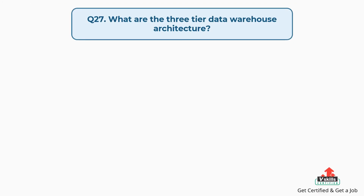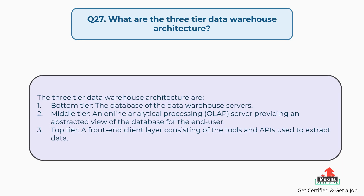Question number twenty-seven: What are the three-tier data warehouse architecture layers? The three tiers are: first, the bottom tier — the database of the data warehouse servers; second, the middle tier — an online analytical processing (OLAP) server providing an abstracted view of the database for the end user; and third, the top tier — a front-end client layer consisting of the tools and APIs used to extract data.